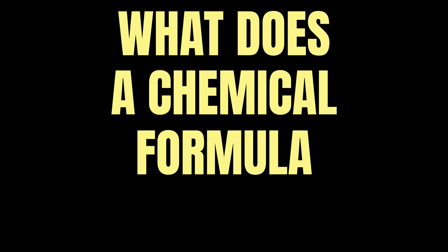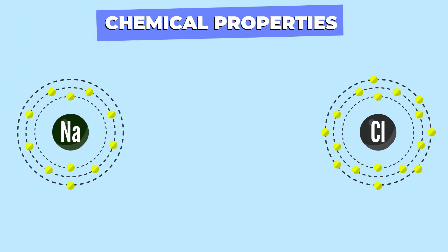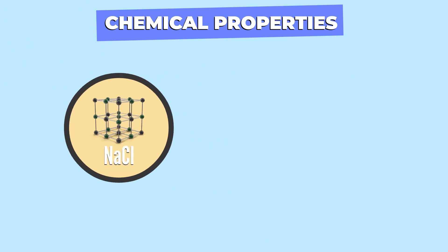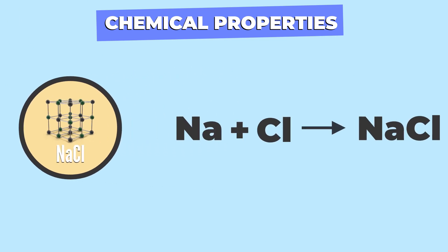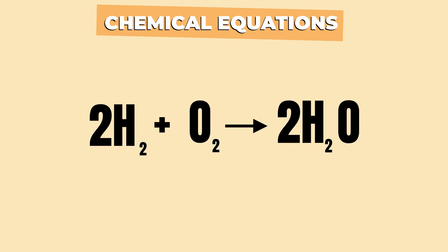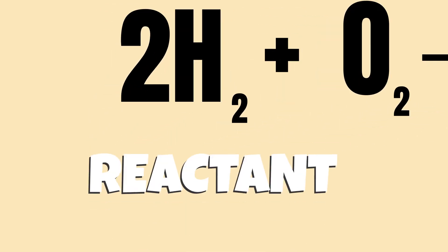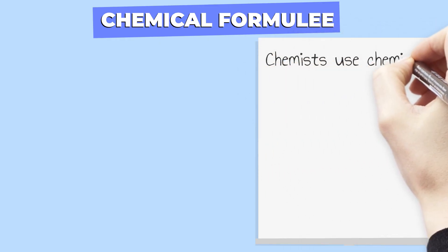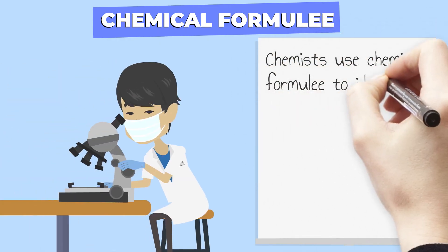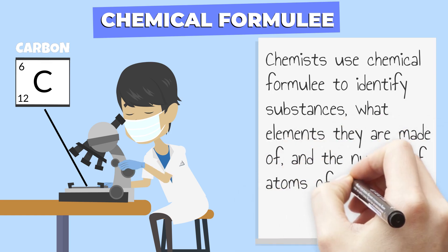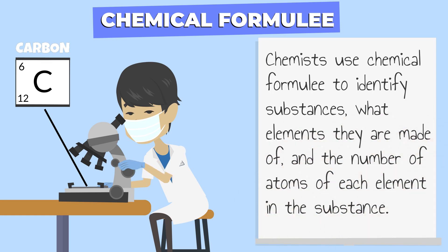So what does a chemical formula tell us? In a chemical reaction, atoms combine and rearrange themselves to form new substances. To describe this process, chemists use chemical equations. The left side shows the reactants, while the right side shows the products. Chemists use chemical formulae to identify substances, what elements are made of, and the number of atoms of each element in the substance.